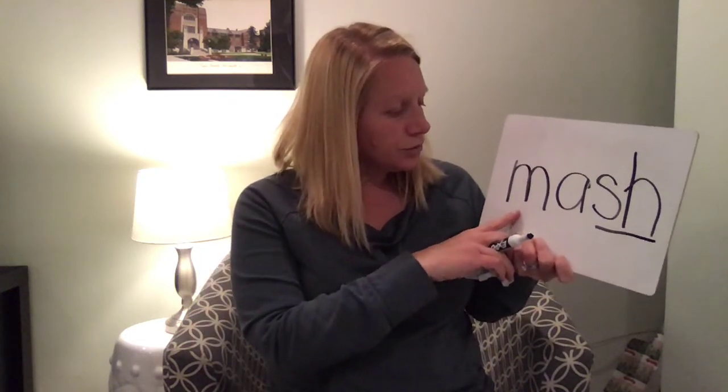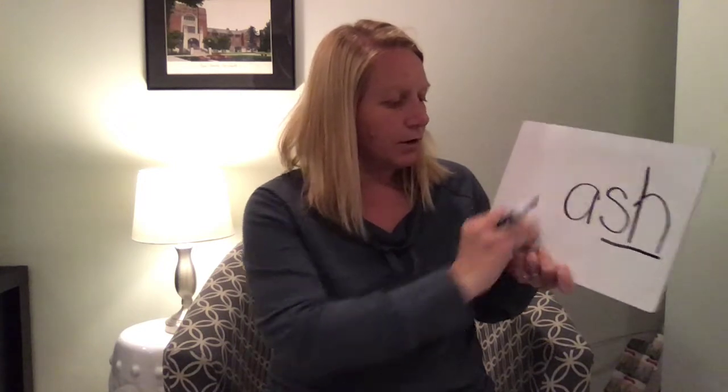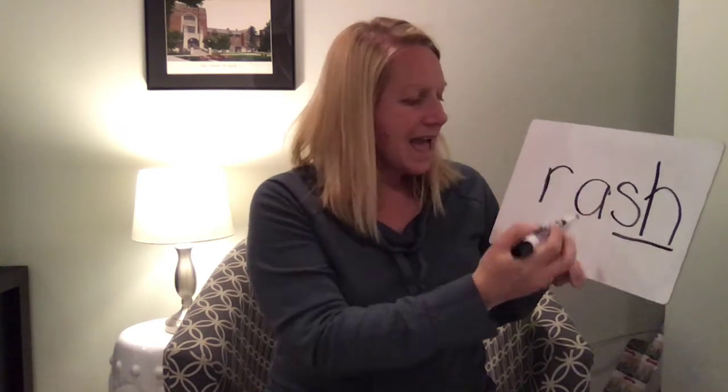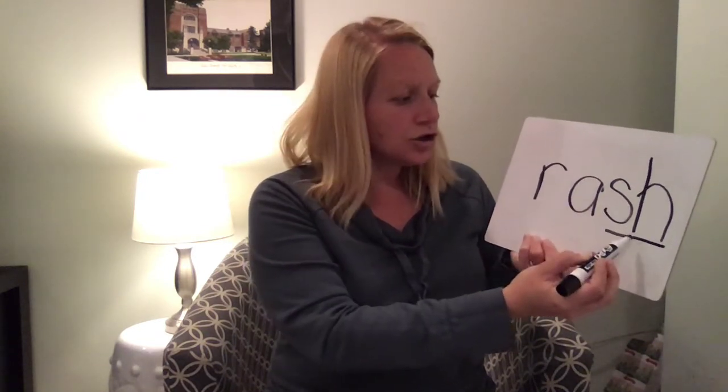Now I want you to write the word "rash." Ask yourself: what changes, what stays the same? Rash — do it on your paper. Is there a digraph? Where is it in the word? Be ready in three, two, one. Rash: I don't need the M sound anymore, I need R. "Ah" is the same, S-H is the same. The S-H digraph comes at the end of the word rash — it stayed the same.